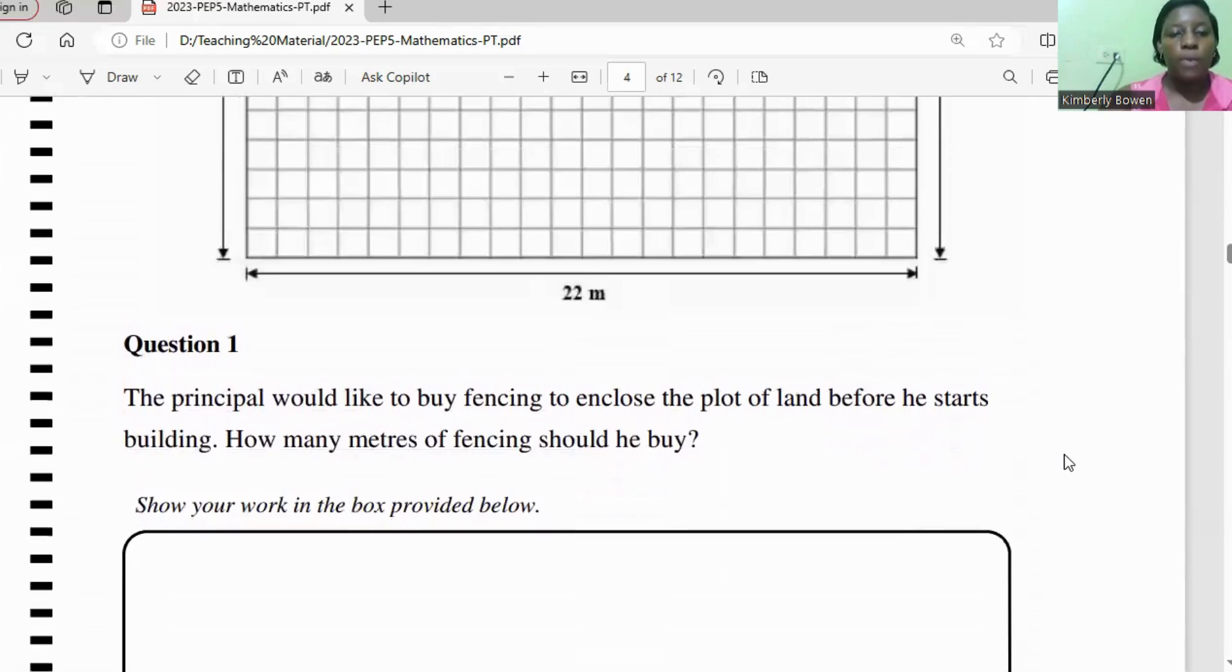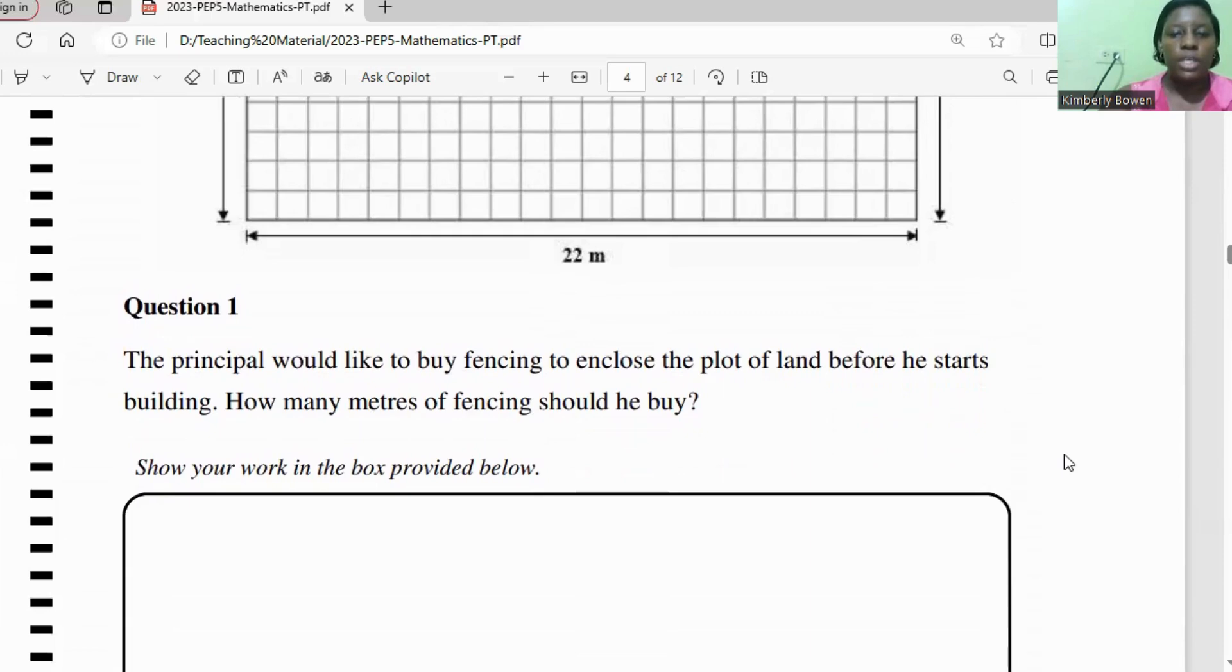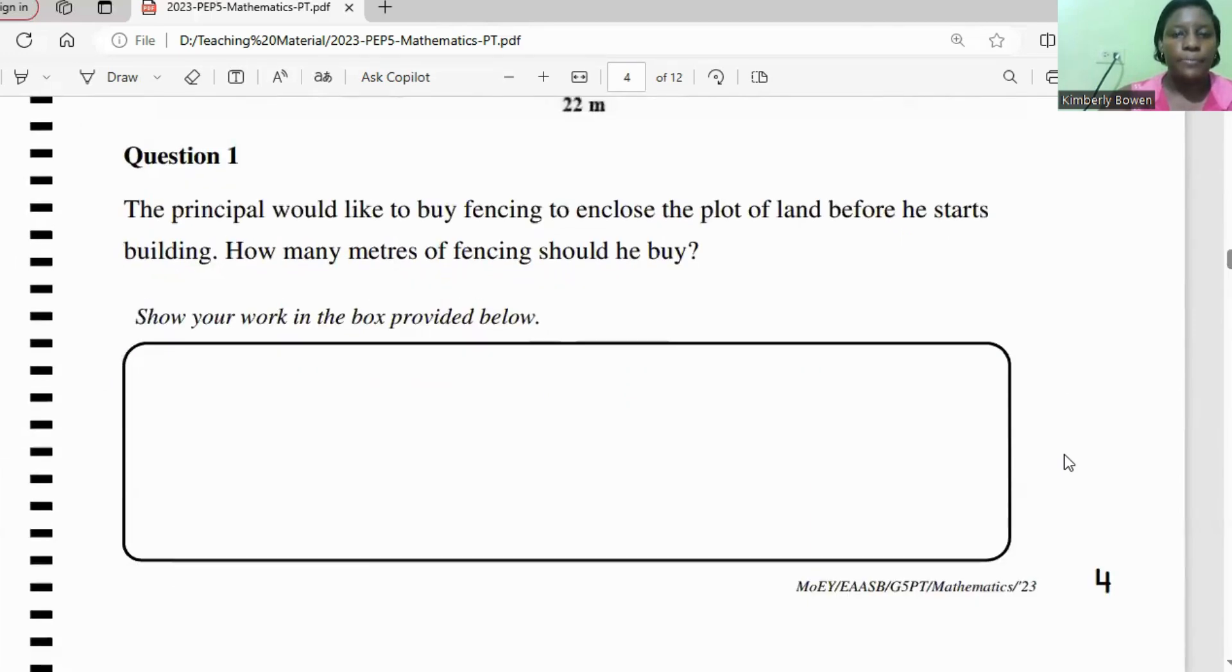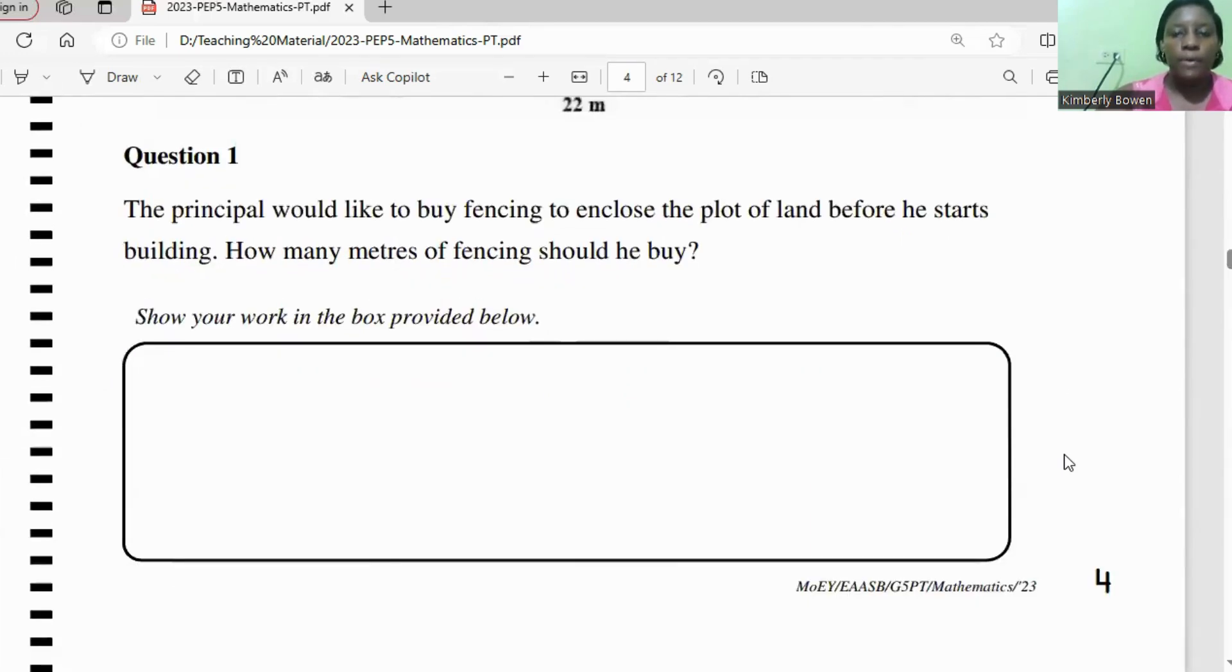Question one, the principal would like to buy fencing to enclose the plot of land before he starts building. How many meters of fencing would he buy? So if we're looking at enclosing the plot, that means that we're looking at the perimeter, the distance around the lot.